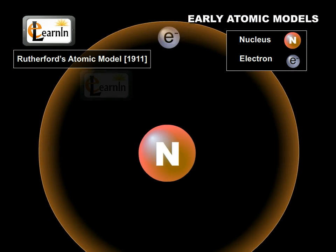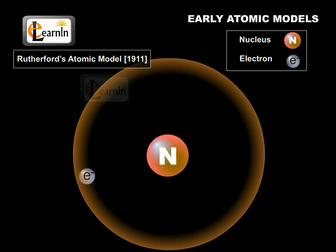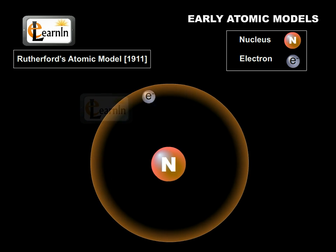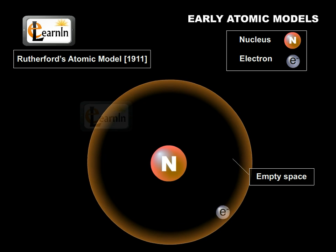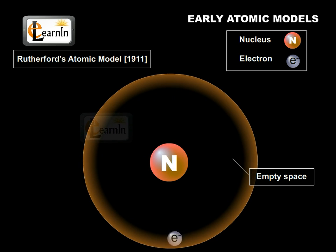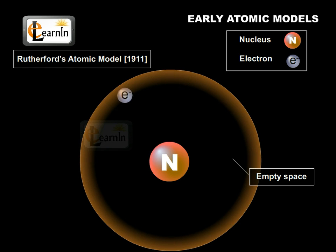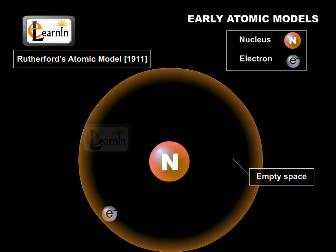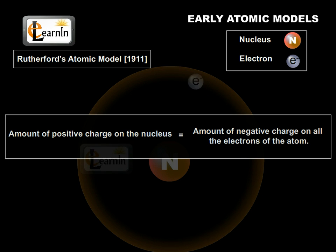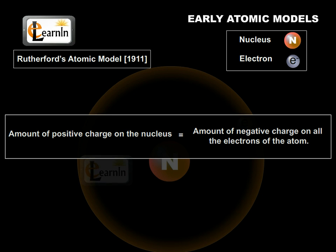Outside this nucleus, there are electrons which move around it at some separation. The space between the nucleus and the electrons is largely empty; however, the size of the atom is determined by the distribution of electrons around the nucleus. The amount of positive charge on the nucleus is exactly equal to the total amount of negative charges on all the electrons of the atom.